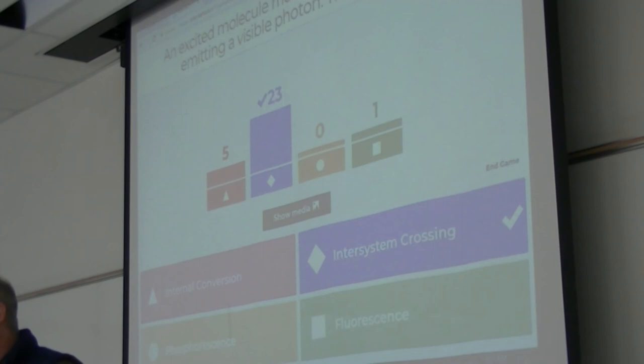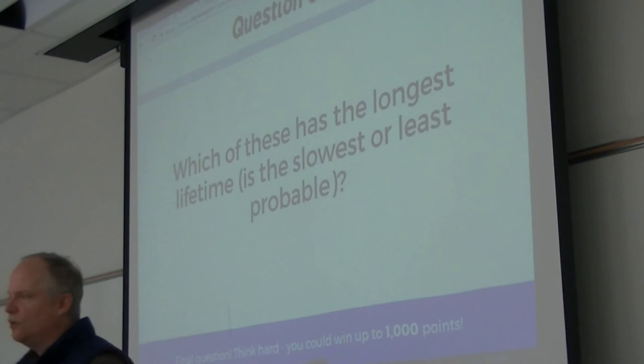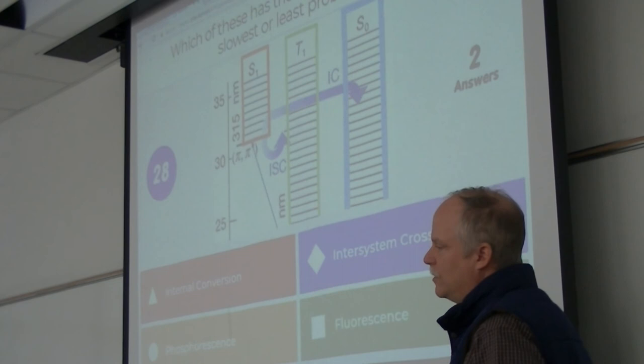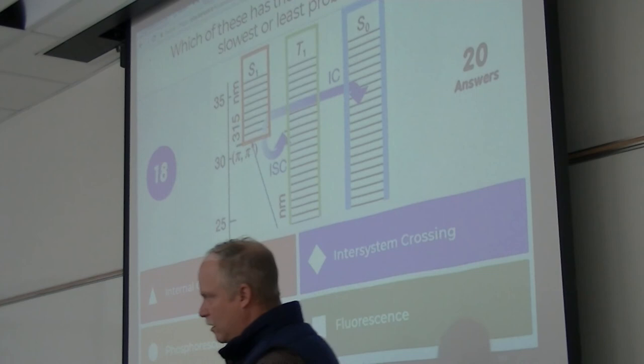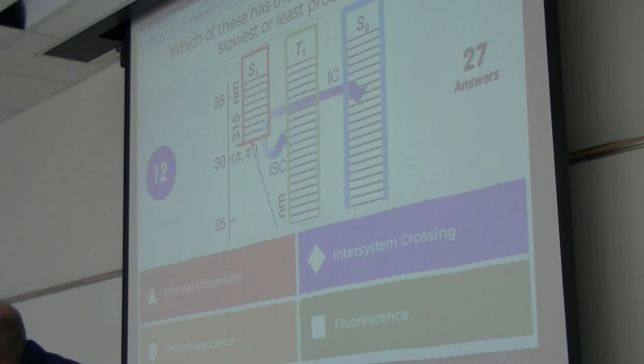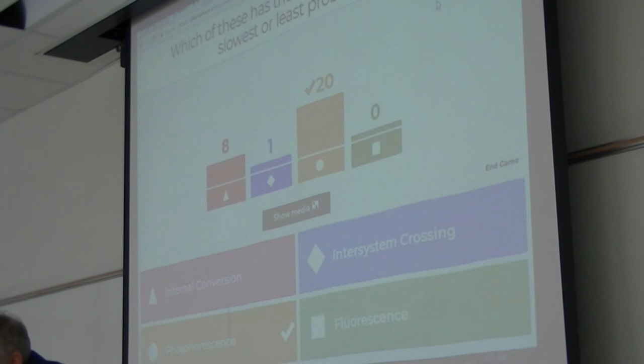Last question: which of these has the longest lifetime or is least probable — internal conversion, inter-system crossing, phosphorescence, or fluorescence? It's phosphorescence because it has to flip a spin and emit a photon at the same time — that's the least probable one. Alright, y'all have a great Thanksgiving break.